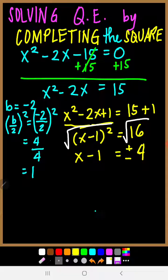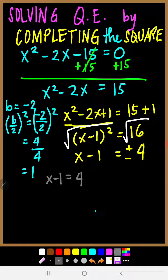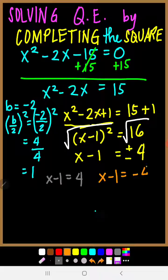Then we make two equations. There will be two equations. The first one will be x minus 1 equals positive 4, and the other one is x minus 1 equals negative 4.